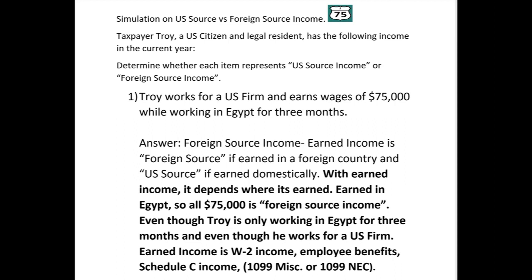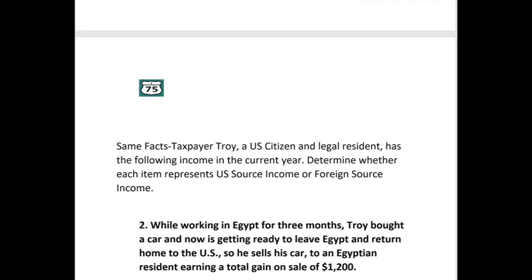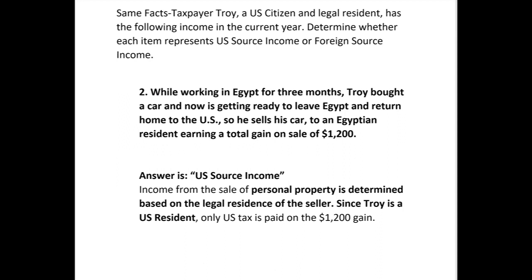Same facts. Number two: while working in Egypt for three months, Troy bought a car and is now getting ready to leave Egypt and return to the US, so he sells his car to an Egyptian resident, earning a total gain on sale of $1,200. Is that gain US source income or foreign source income? The answer is US source income. Income from the sale of personal property is determined based on the legal residence of the seller. Since Troy is a US resident, only US tax will be paid on that $1,200 gain.